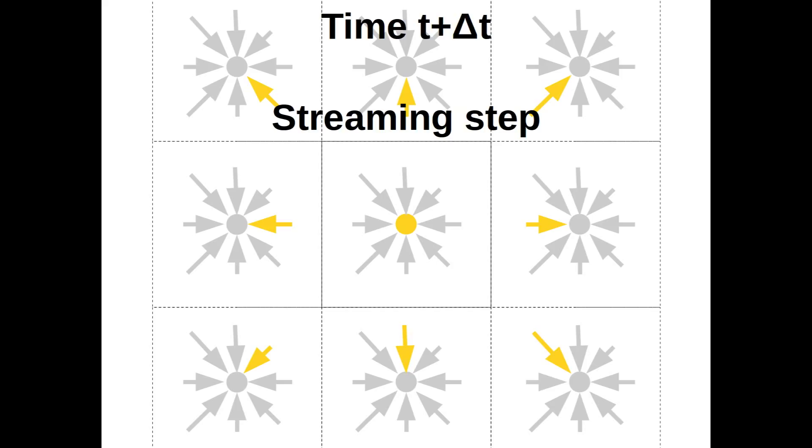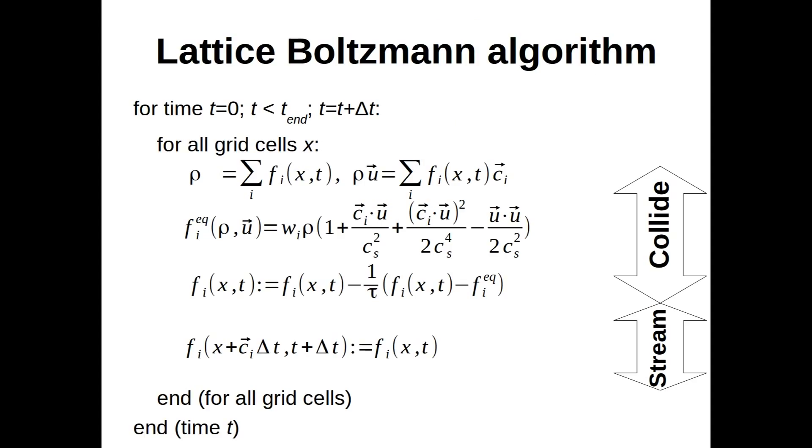We can finally sketch the lattice Boltzmann algorithm. For a given number of time steps, we loop through all grid cells and execute the collide step in each cell.